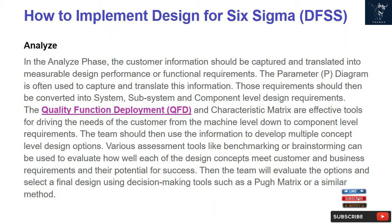Analyze: In the Analyze phase, customer information should be captured and translated into measurable design performance or functional requirements. The Parameter (P) diagram is often used to capture and translate this information. Those requirements should then be converted into system, subsystem, and component-level design requirements. The Quality Function Deployment (QFD) and characteristic matrix are effective tools for driving the needs of the customer from the machine level down to component-level requirements. The team should then develop multiple concept-level design options. Assessment tools like benchmarking or brainstorming can evaluate how well each design concept meets customer and business requirements. The team will then select a final design using decision-making tools such as a Q matrix or similar method.